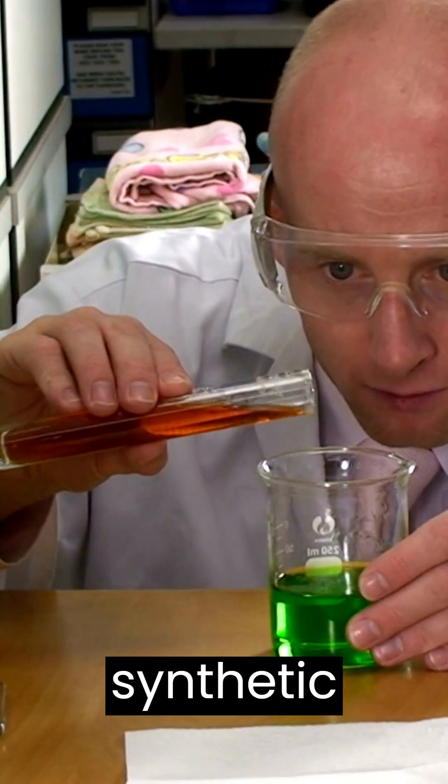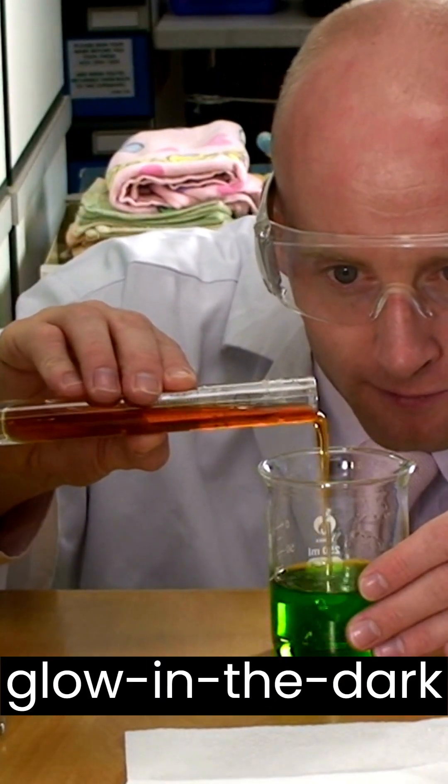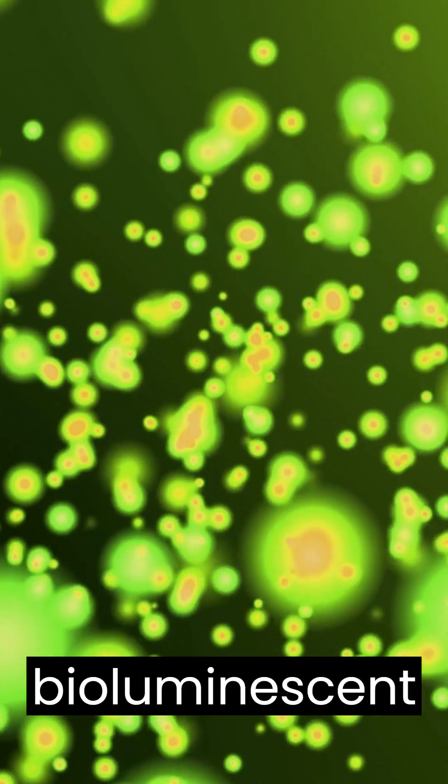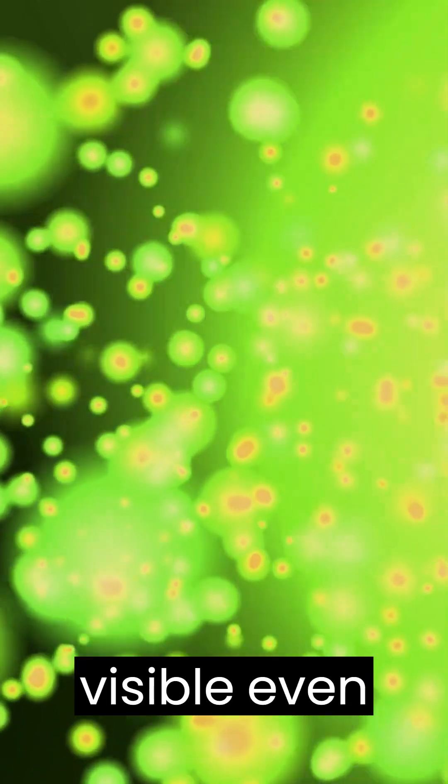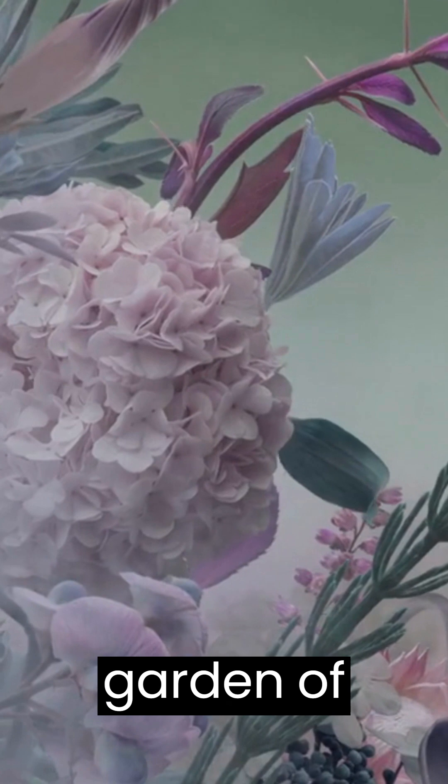Did you know that scientists have used synthetic biology to create glow-in-the-dark plants? By splicing genes from bioluminescent organisms into plants, they can make them emit a natural light that's visible even in the dark. It's like having your own little garden of stars.